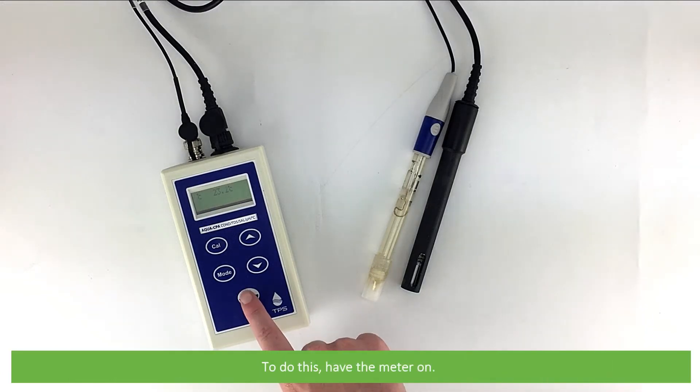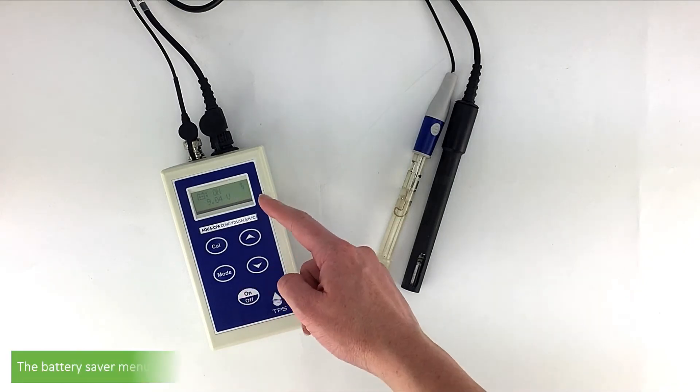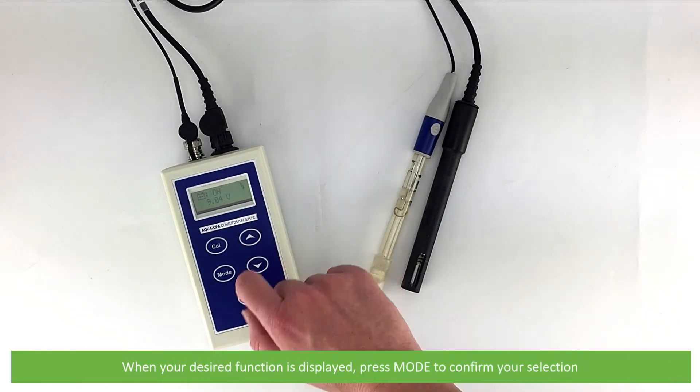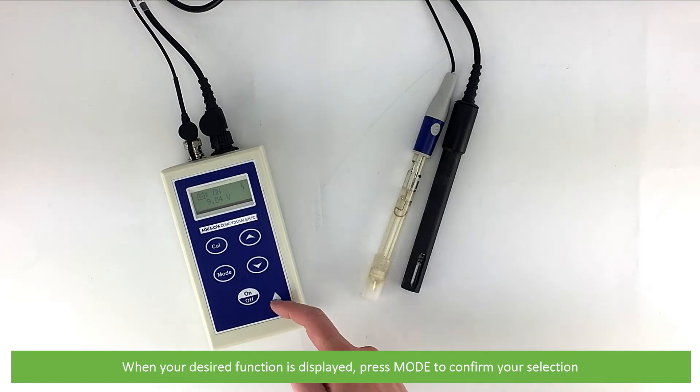To do this, have the meter on. Press and hold the on-off key for 3 seconds. The battery saver menu will display. Then use the up and down arrow keys to turn the battery saver function on or off. When your desired function is displayed, press mode to confirm your selection.